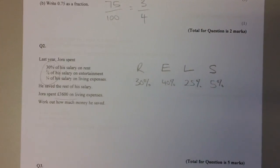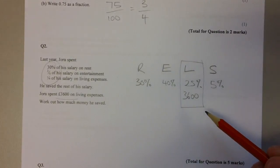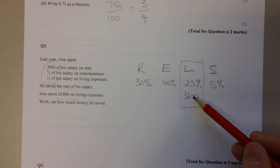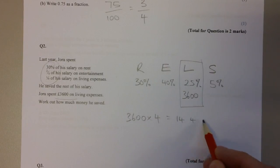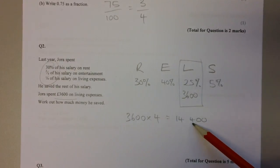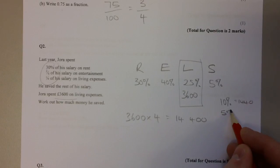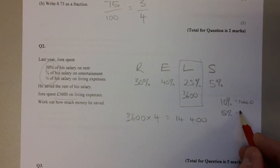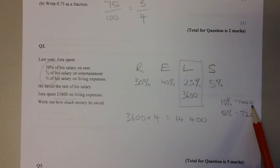You're also told that £3,600 was spent on living expenses. If a quarter of his salary was spent on living expenses, then his salary must have been four times however much he spent on living expenses. £3,600 times four - double it, double it again - to get £14,400. We know that 5% of his salary was saved. To work out 5%, find 10% first by dividing by ten, and then 5% is half of 10%. Half of £1,440 is £720. He saved £720.